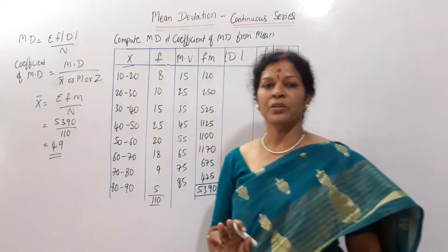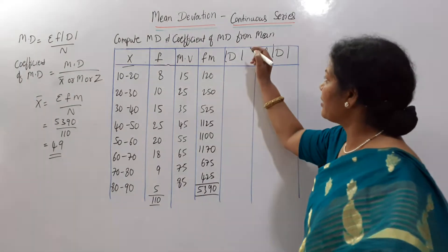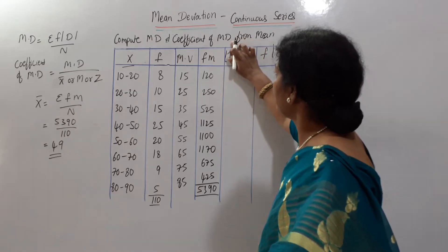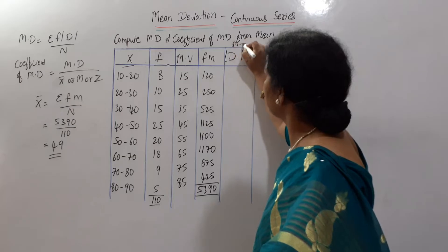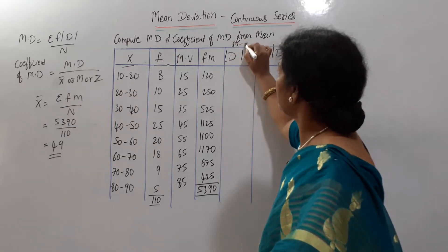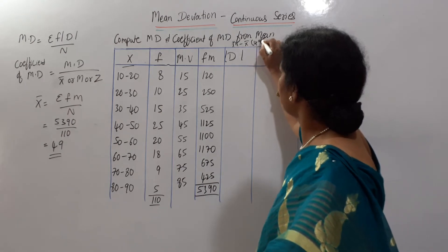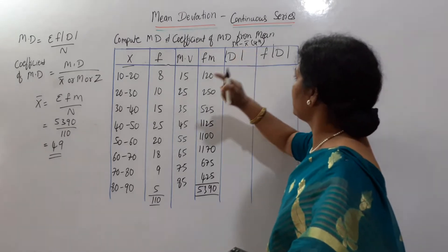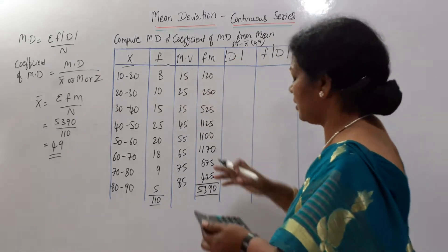Once if you know that the x bar is 49, then immediately you have to go for mod D. How do you get mod D? x minus, x minus mid value, right? So you can say it here, m minus x bar. x bar is here, 49. I will use the calculator. M is here. 15 minus 49.